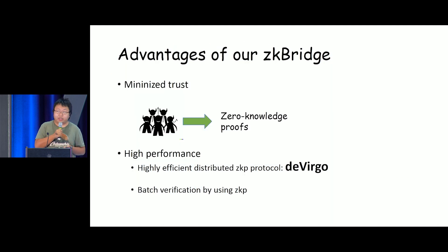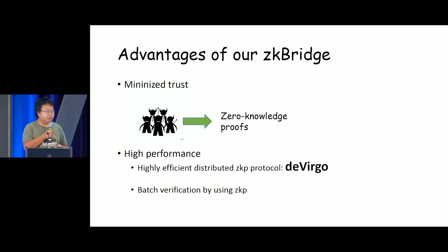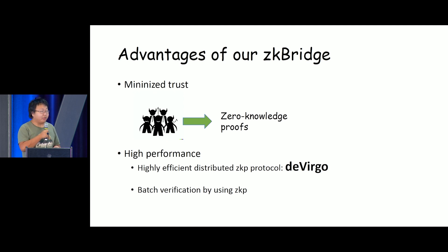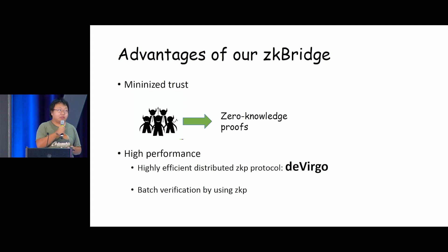Today I'm going to propose a new framework called ZK Bridge, and it's going to solve all of these issues in one shot. First, we minimize the trust by using zero-knowledge proofs. So instead of trusting a group of committee, we trust the correctness of zero-knowledge proof protocols.